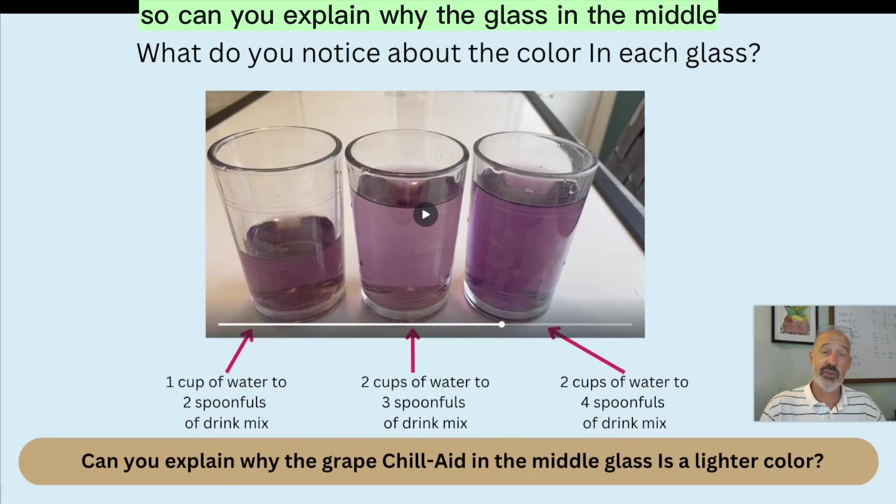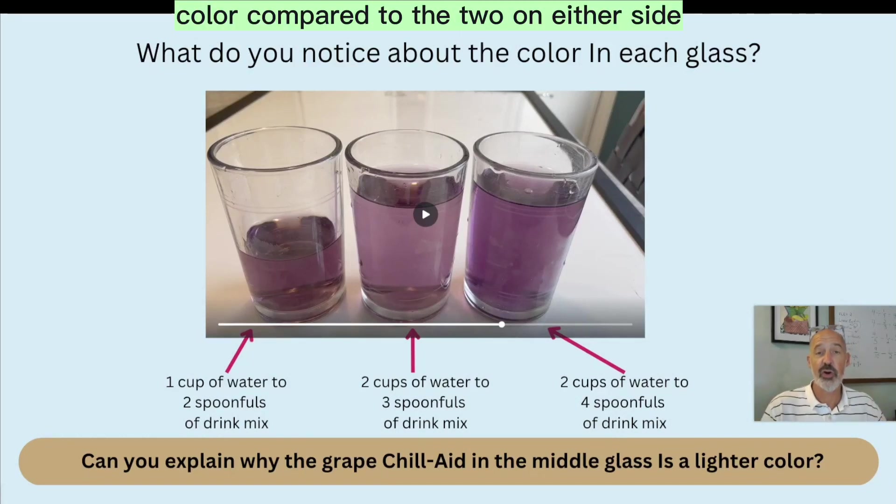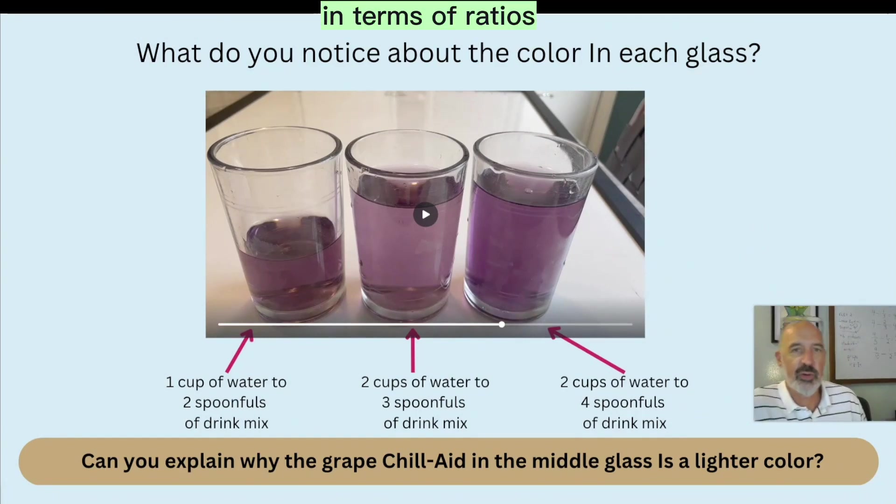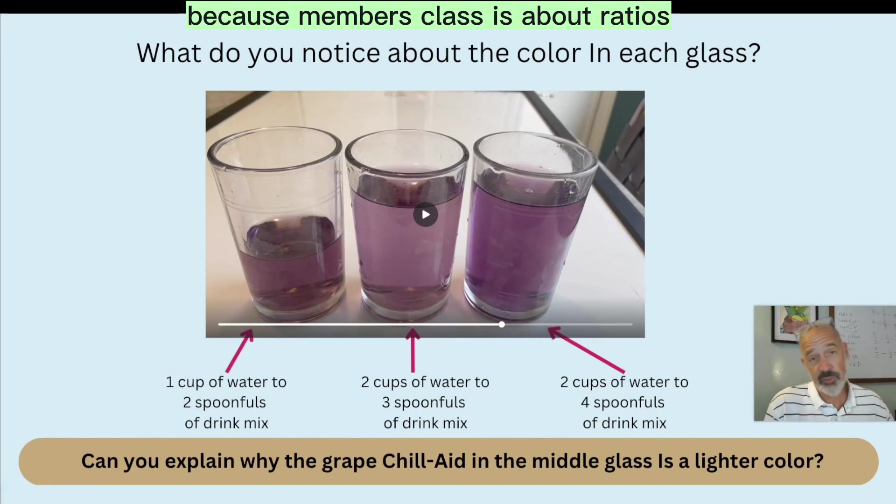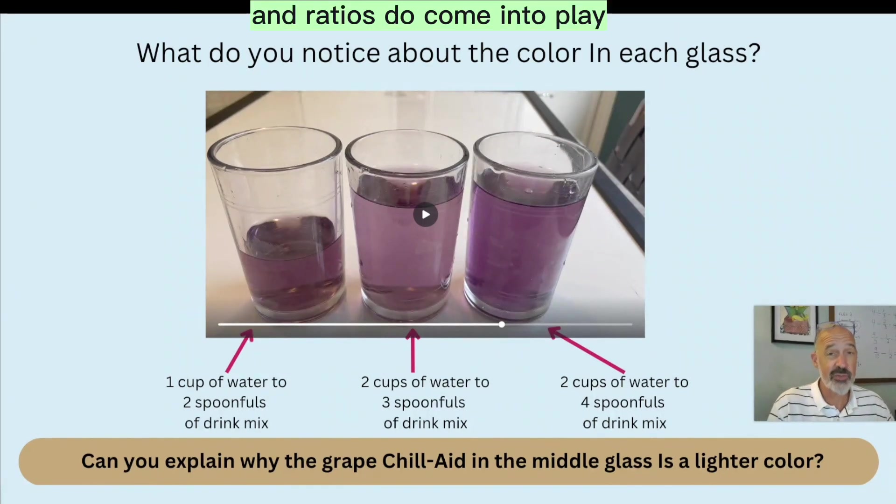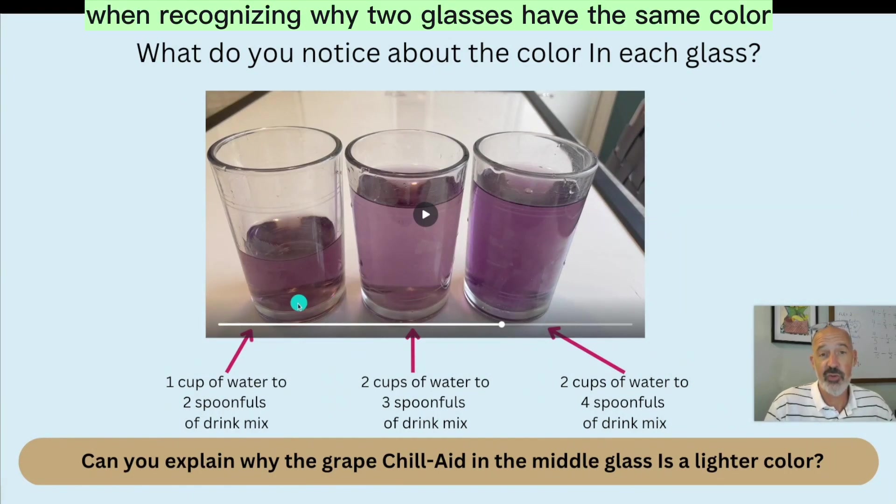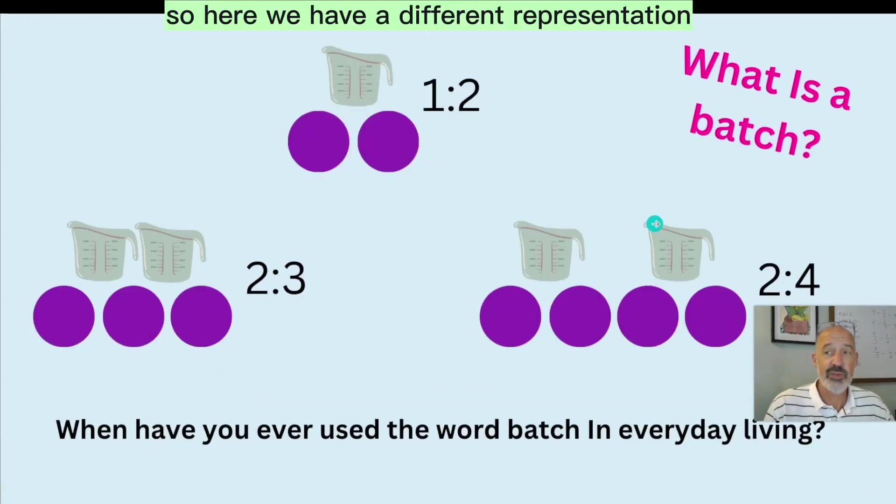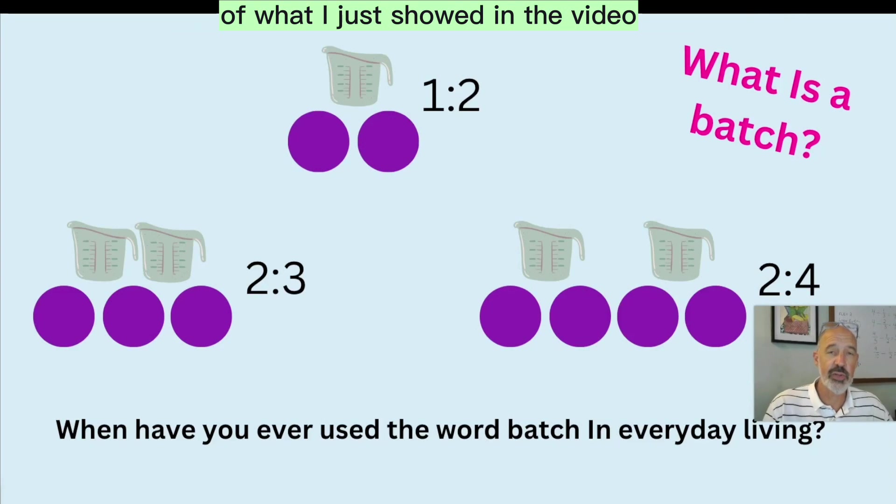So can you explain why the glass in the middle is a lighter color compared to the two on either side? That's the question that we really want to think about in terms of ratios, because remember this class is about ratios, and ratios do come into play when recognizing why two glasses have the same color and one is lighter. So here we have a different representation of what I just showed in the video. And I'd like to pause for a second and talk about what a batch is.